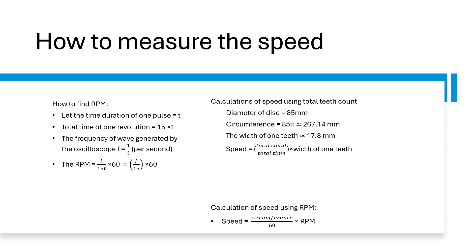So now we will see how to measure the speed. We have two methods to find the speed: one is the RPM method and the other one is the teeth count method. In the first method we know the diameter of the disc, and so we can find the circumference which is almost equal to 267.14 millimeters. And the disc has 15 teeth, so the width of one tooth is something like 17.8 millimeters.